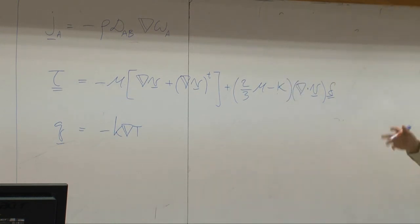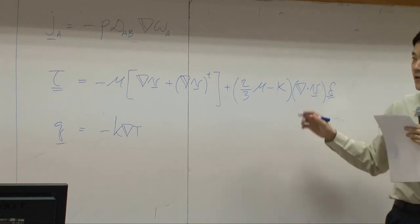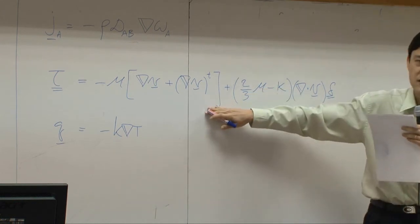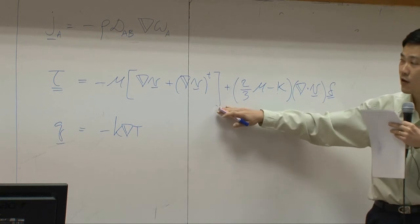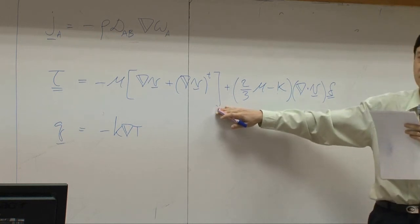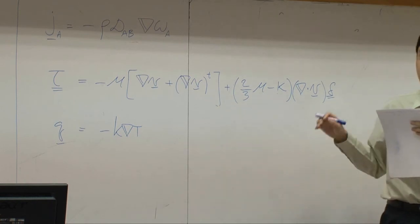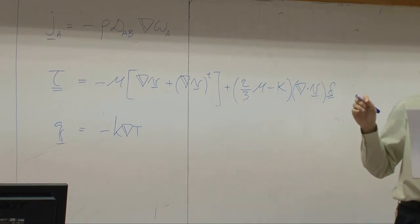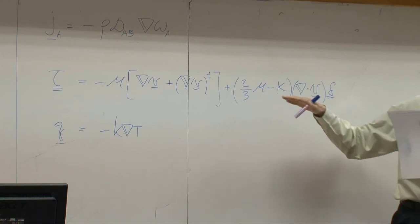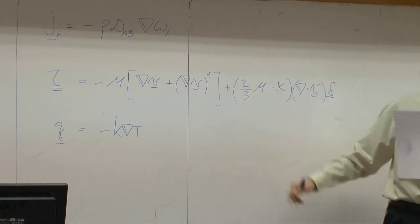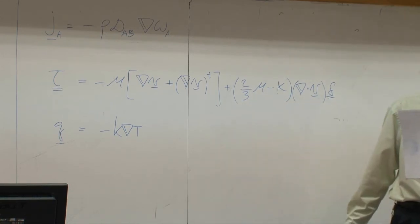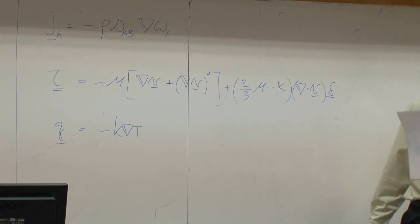Now, the point is, this equation, Newton's law, Newton's law was derived when we consider system with pure species. What would happen if I have more than one species in the system? Can Newton's law be applied? Do you think Newton's law is still applicable for the system containing more than one species?